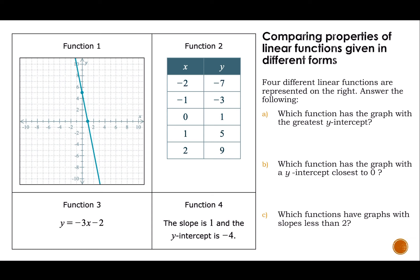Four different linear functions are represented. We want to answer: which has the greatest y-intercept? Which function has the graph with the y-intercept closest to zero? And which functions have graphs with slopes less than two? A good thing to start with is identifying the slopes, which are our m's, and our y-intercepts, which are our b's.